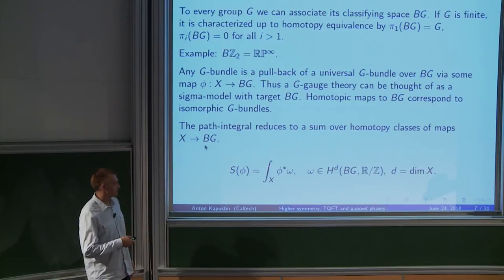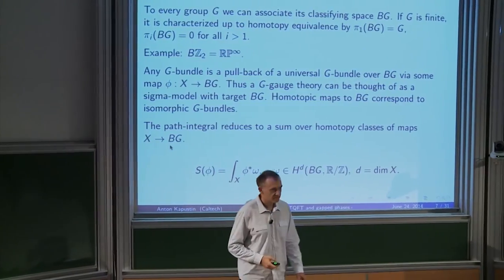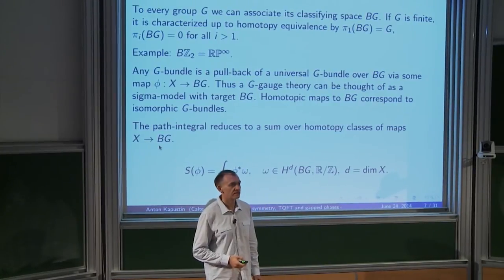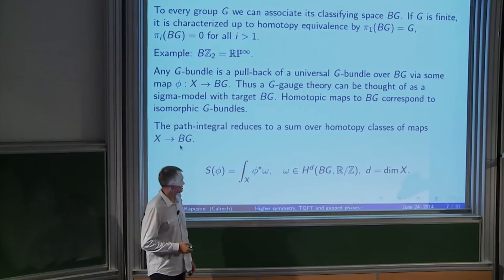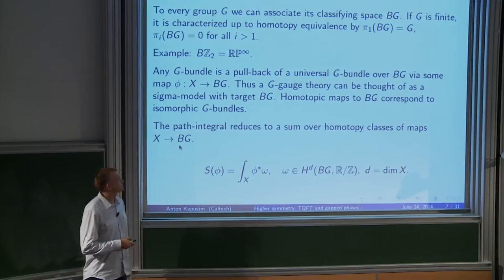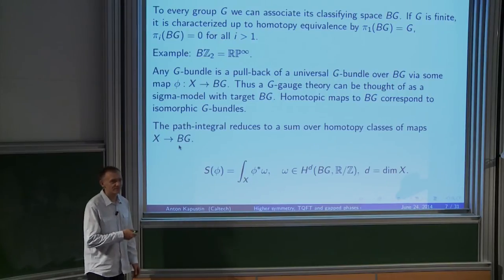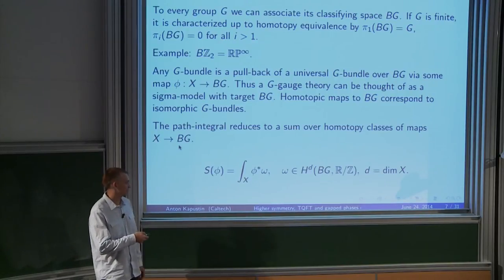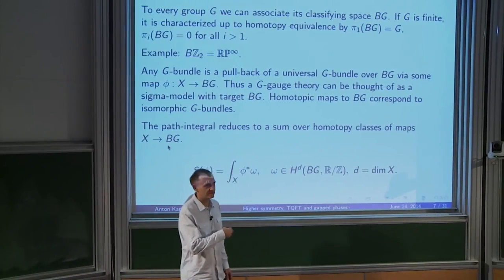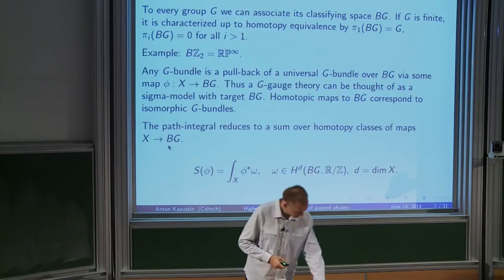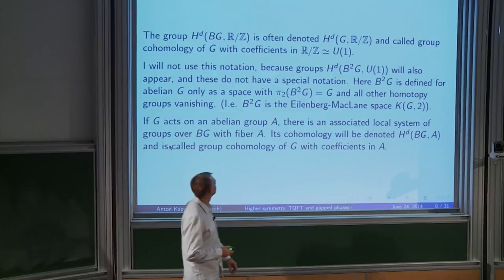This gives all possible topological actions. One can also replace cohomology by bordisms — in a talk at Davis they were most concerned with that version, but here I'm going to focus on the simplified version. People often denote this group as group cohomology of G, but I don't use that notation because I'll also be using cohomology of iterated classifying spaces like B²G, and that doesn't have a special notation.